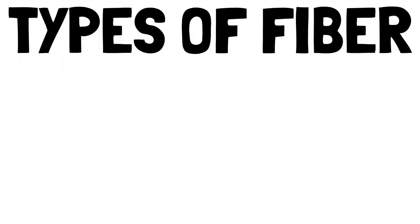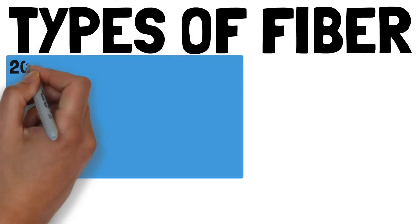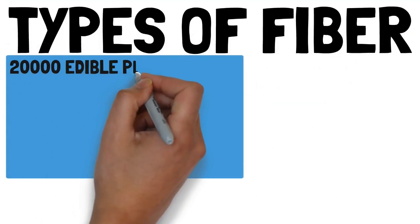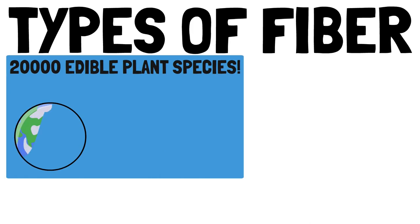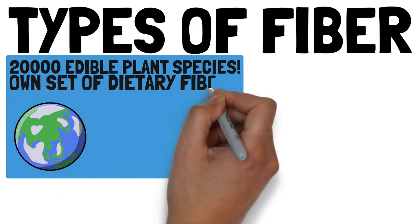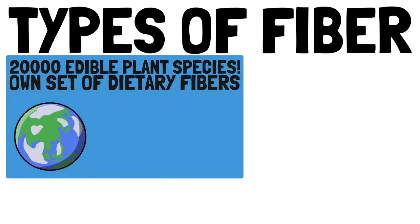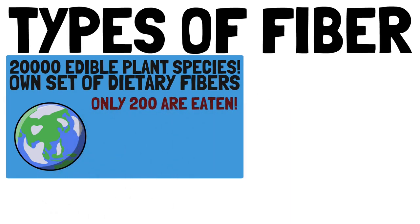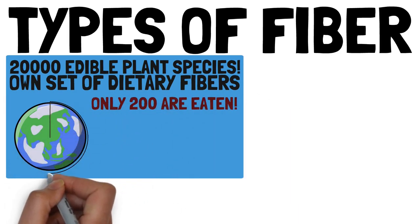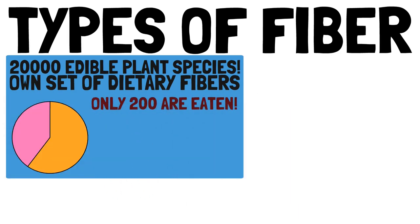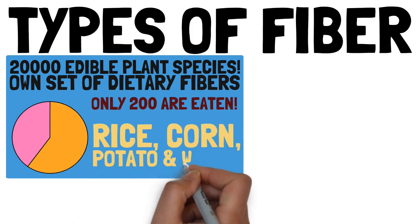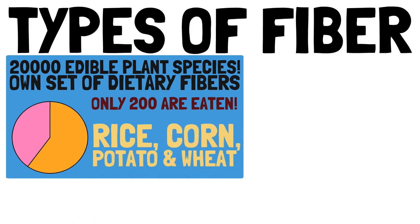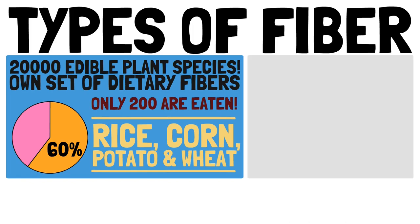There are 20,000 edible plant species on this planet, and each comes with its own set of dietary fibers. Sadly, only 200 plant species are commonly eaten, and just four crops — rice, corn, potato, and wheat — make up nearly 60% of calories we get from plants.